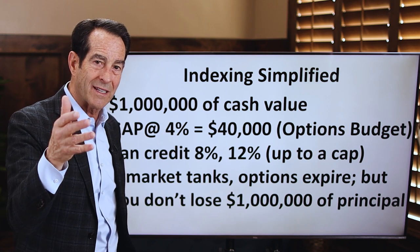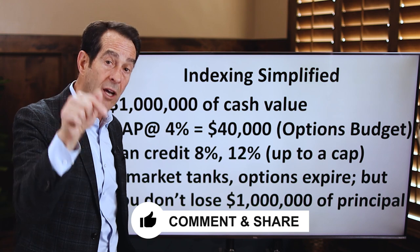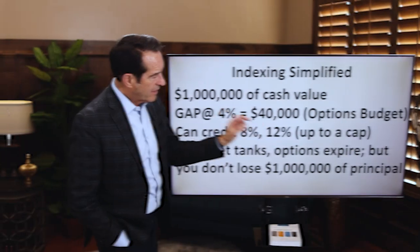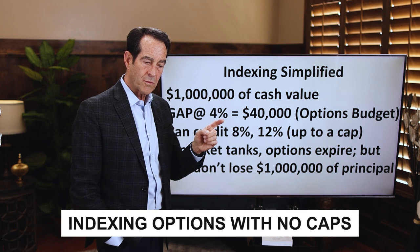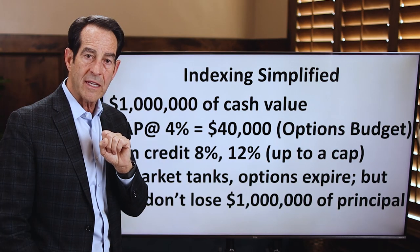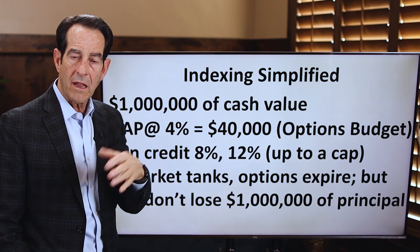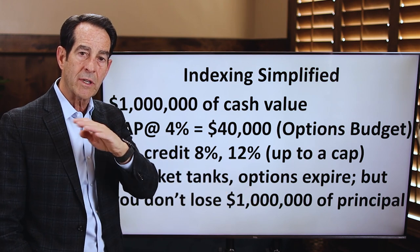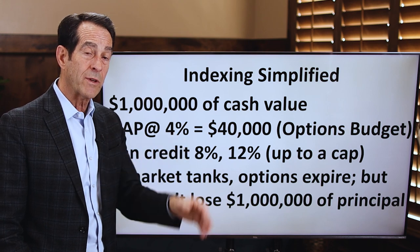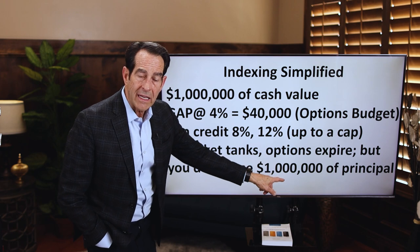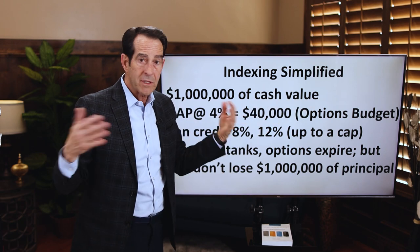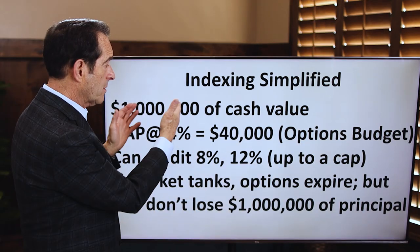If this is already arousing some curiosity, share this video and post a comment so we can help you understand it even better. Sometimes you can choose indexing options with no caps — like many of our clients did from March 2020 to March 2021. They subtract maybe 5% off the top a year later. The market went up 66.33% minus 5 percentage points, so they netted 61.33%. Pretty phenomenal — and you do not lose any of your principal if the market goes down. The interest that funded the options just expires worthless, but you don't lose your principal.